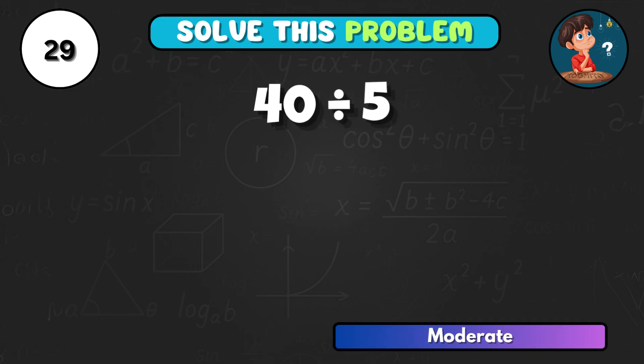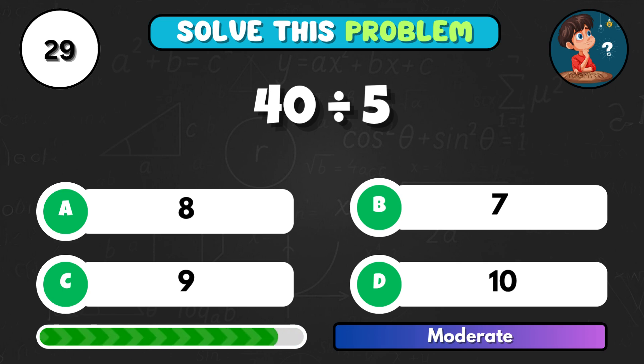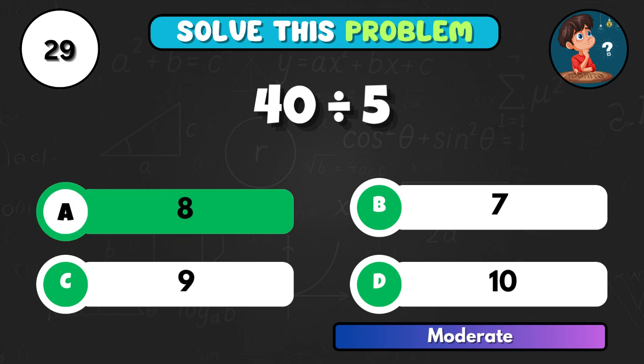40 divided by 5, what's the quotient? That's A equals 8.